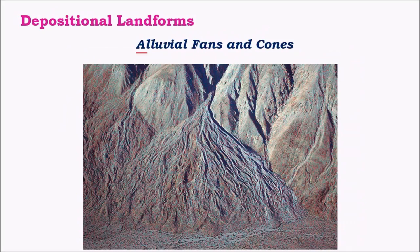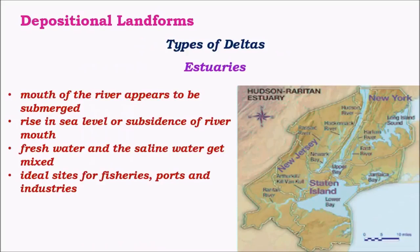Coming to depositional landforms, the first important one is alluvial fans or cones, which are mainly found in the lesser Himalayan or lower Himalayan regions, that is Shivaliks. Shivaliks are mainly formed due to depositions accumulated over time due to rivers carrying huge amounts of silt from the main mountains. These depositions accumulate along these lines, giving rise to a hilly, silt and alluvium-filled landform called alluvial fans.